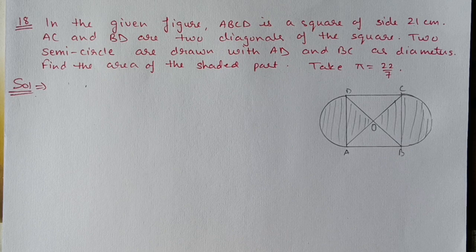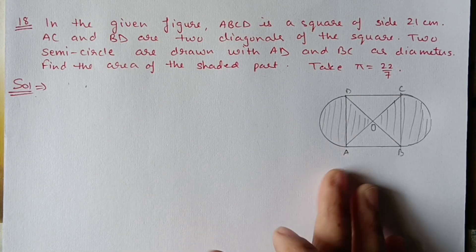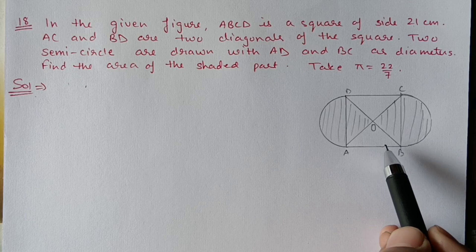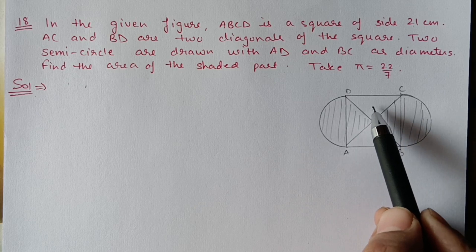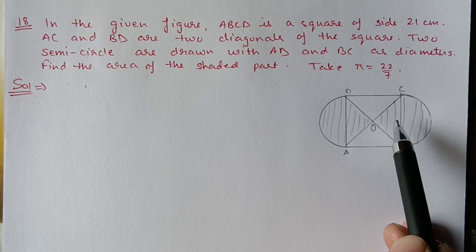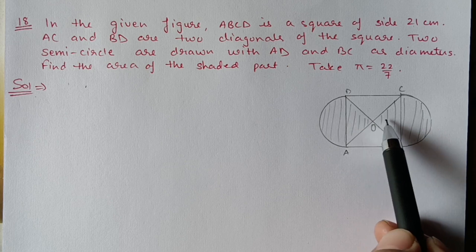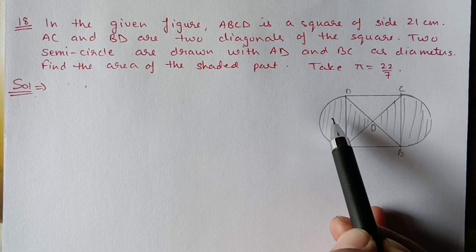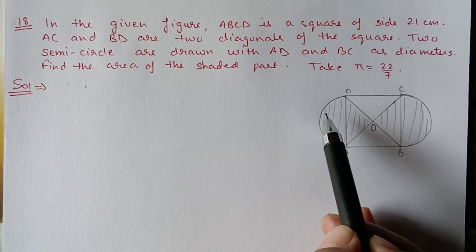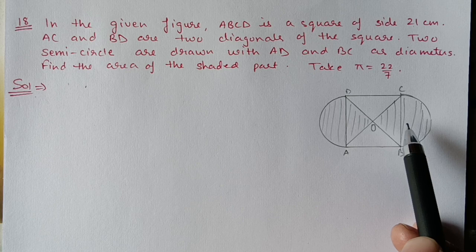Next, Question 18. In the given figure ABCD is a square of 21 centimeter. AC and BD are two diameters of the square. Two semicircles are drawn with AD and BC as diameter. Find the area of the shaded part. Take π = 22/7. The square is divided by its two diagonals into 4 equal parts. Two triangles form the shaded part, meaning half the square, plus two semicircles which together make one full circle.